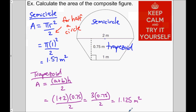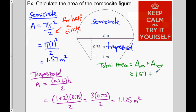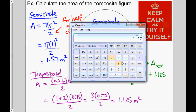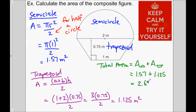Now all we need to do is add the two together. The total area equals the area of the semicircle plus the area of the trapezoid. The semicircle was 1.57 and the trapezoid was 1.125. Adding those gives us 2.695 meters squared. We identified the two shapes, calculated both areas, and added them together. Just be careful about measurements — for instance, diameter versus radius.